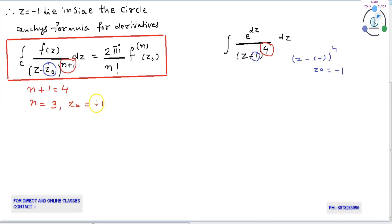Z0 equals minus 1, n equals 3. Substitute z0 equals minus 1 in Cauchy's integral formula for derivatives.